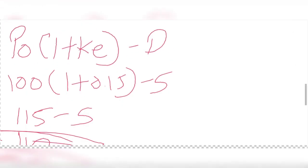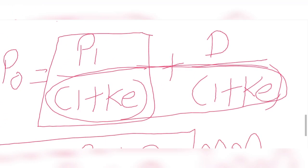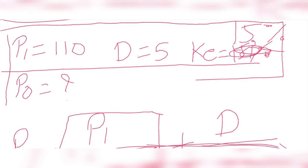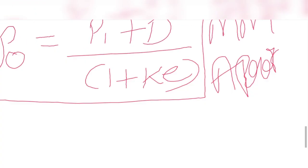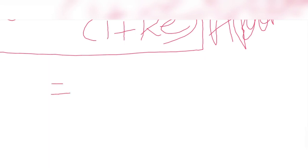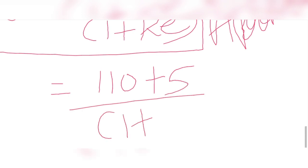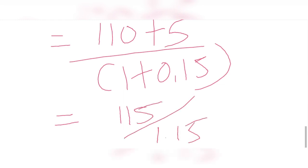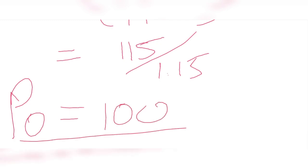Now we solve this question. P1 is equal to 110, dividend is 5, divided by (1 plus the required rate of return of 15 percent), so 115 divided by 1.15, which means P0 is equal to 100.